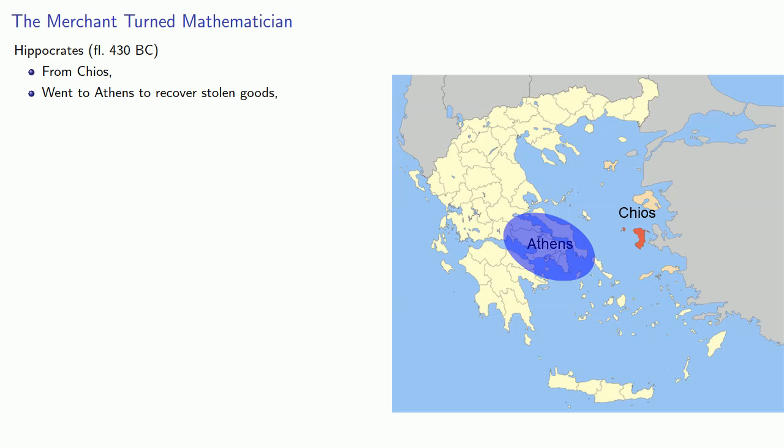So to keep himself entertained, he attended some lectures in mathematics, and after a while, he said to himself, Hippocrates, you can do that. And so he became the first person we know by name to be paid to be a teacher of mathematics. Hippocrates also wrote the first known textbook on geometry, which he called the Elements. We'll talk about that more later.